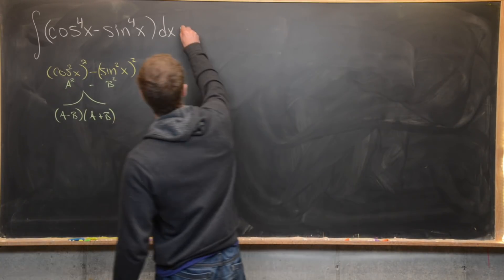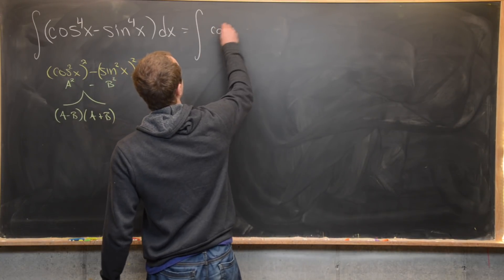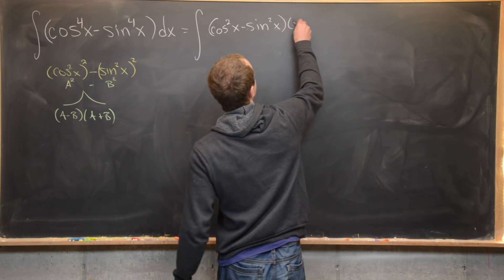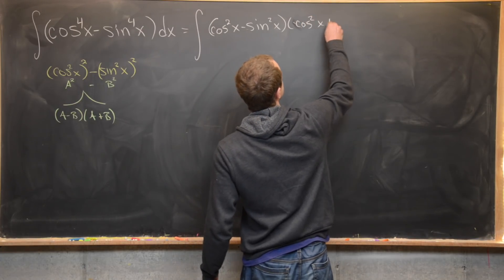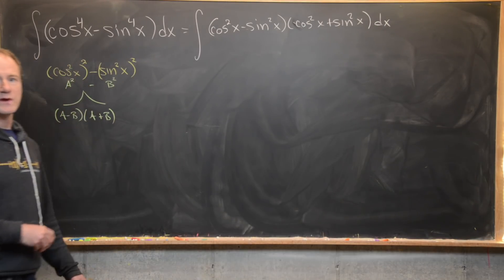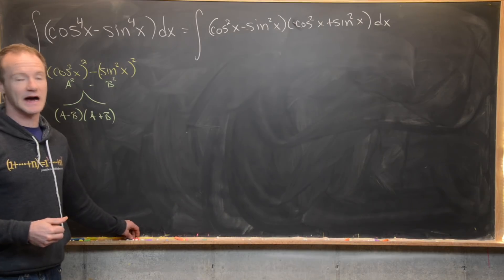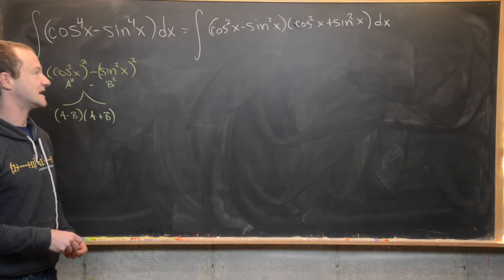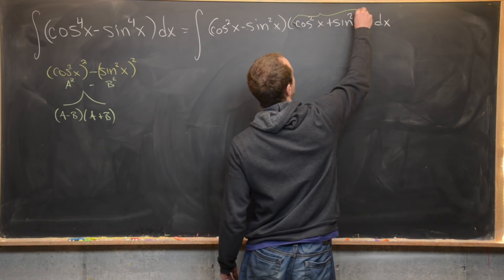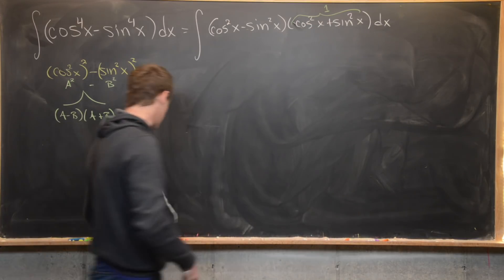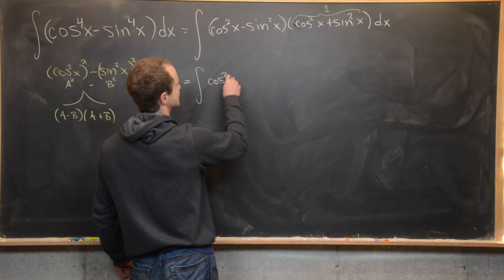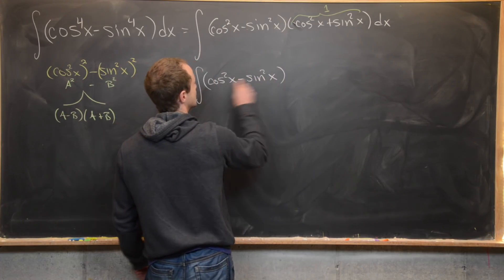Applying that factorization gives us the integral of (cosine squared x minus sine squared x) times (cosine squared x plus sine squared x) dx. The whole point is to use the Pythagorean identity: cosine squared plus sine squared equals one. So that second factor is just one, and all we really need to calculate is the antiderivative of cosine squared x minus sine squared x dx.